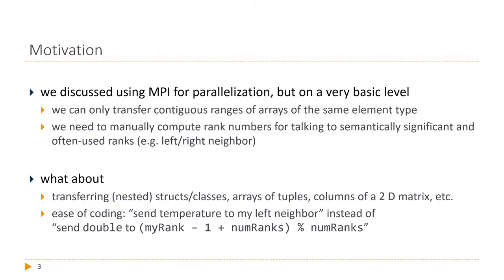Now, I'd like to give a short motivation as to why we talk about this. So far, we discussed using MPI for parallelization and distributing data, having multiple processes work on the same problem. But all of this was done on a very basic level. At the moment, we can only transfer contiguous ranges of arrays of the same element type — we can send a single array of a million integers or two million floating-point elements, but that's everything we can do.